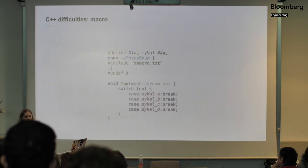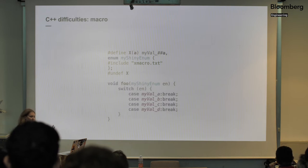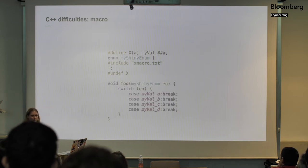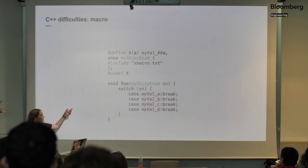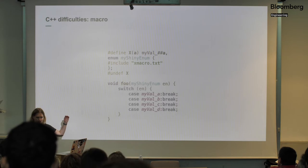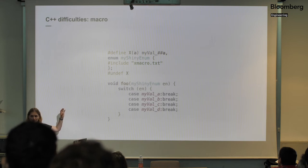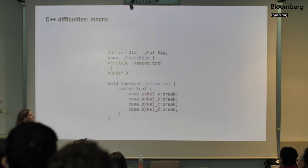Another example is macros — our background, present, and unfortunately our future. We can't escape from them. The biggest problem is that macros are just text substitution, meaning they are not context-aware and they break the context completely. For example, I have an X macro file which is not valid C++ code on its own — it's just text. When I undefine the macro I lose all traces of what actually happened there. I just got some enumeration in the end and I don't know where it came from.